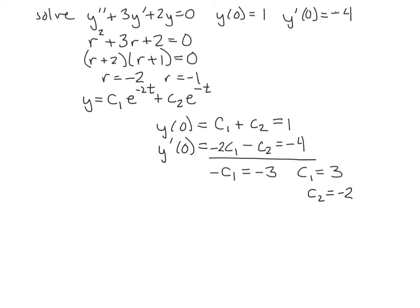And then we're going to just plug those back into the differential equation and rewrite. y is equal to, c1 was 3 e to the negative 2t, and c2 is negative 2 e to the negative t. Pretty simple, yeah?